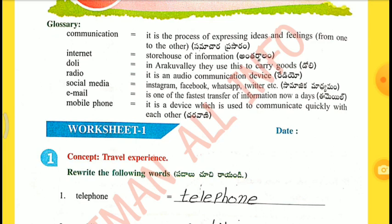Internet — storehouse of information. Dolly — in Arca Valley they use this to carry goods. Radio — it is an audio communication device. Social Media — Instagram, Facebook, WhatsApp, Twitter, etc. Email — is one of the fastest means of transfer of information nowadays. Mobile Phone — it is a device which is used to communicate quickly with each other.